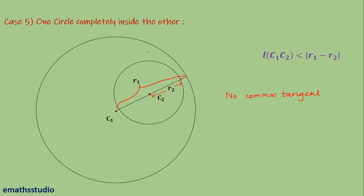This completes the theory for two circles. In the last lecture we discussed three cases: two circles intersecting each other, two circles touching internally, and two circles touching externally. In this lecture we covered disjoint circles and one circle lying completely inside the other — totaling five cases.